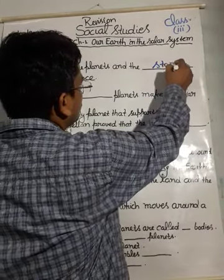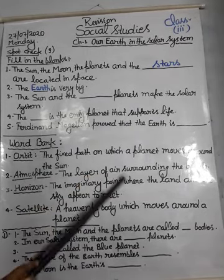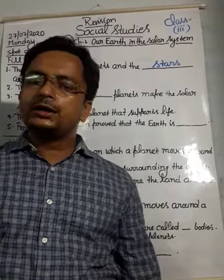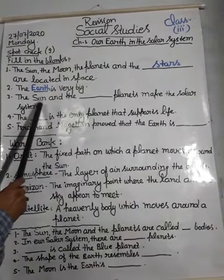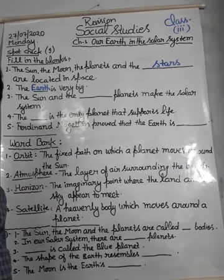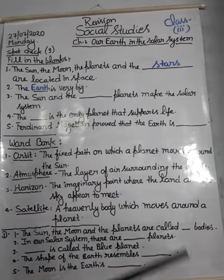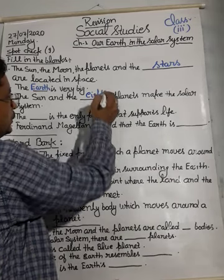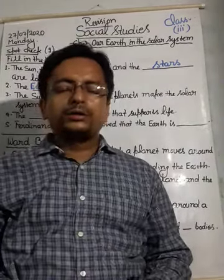The second question is: the dash is very big. The answer is the earth — the earth is very big. And next: the sun and the dash planets make their solar system. How many members are there in the sun family, or the solar system? There are eight planets that make the solar system.